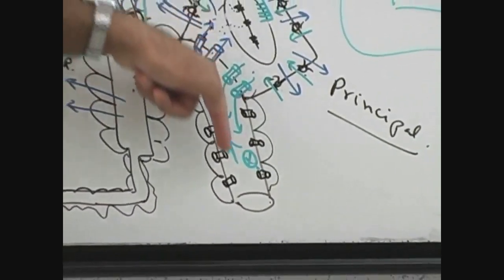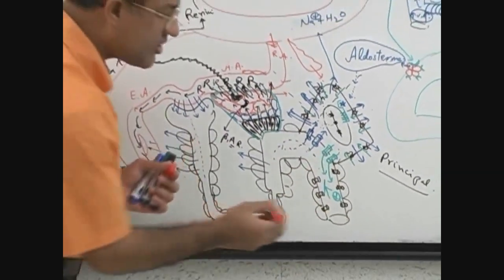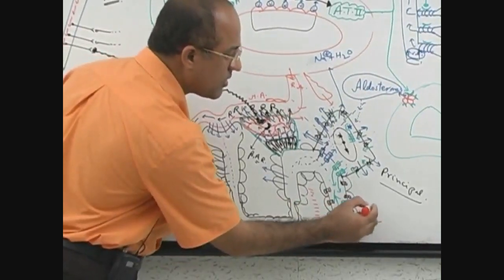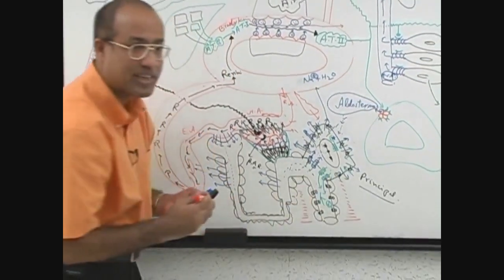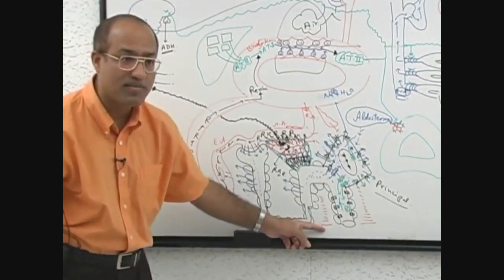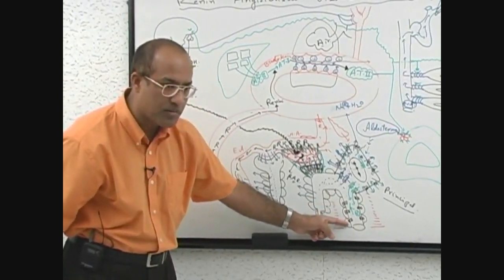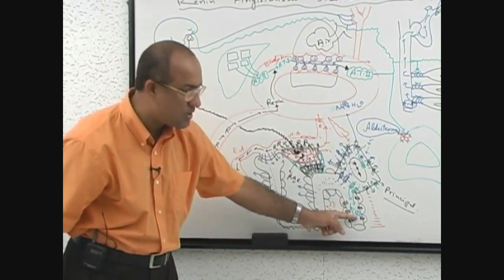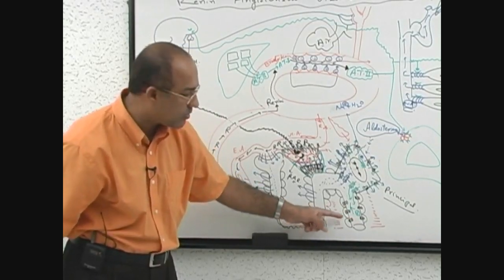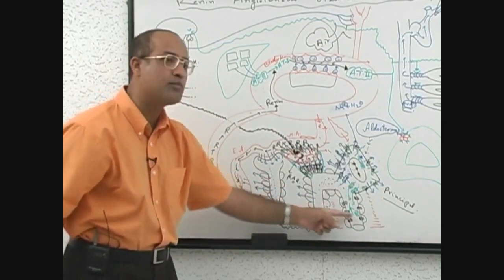And when this nephron is moving towards the medullary interstitium, the medullary interstitium is hyperosmolar. When I teach you kidneys you will know that very clearly, that medullary interstitium is hyperosmolar. Osmolality here is very high. When this part of the nephron becomes water permeable, here fluid is hyposmolar, here fluid is hyperosmolar.